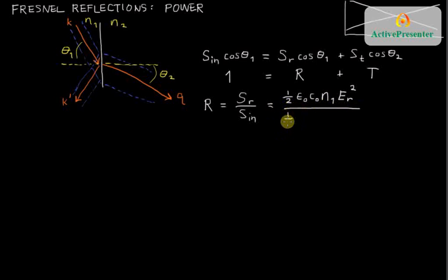All of the terms in the denominator for S incident are of the same form, and crucially, the refractive indices are the same, just as the angles were the same. And the only thing that's different is that we have E incident squared as the strength of the electric field. So the ratio of these two things, most of the terms cancel out.